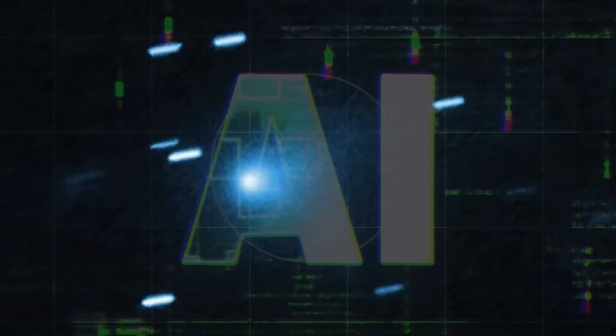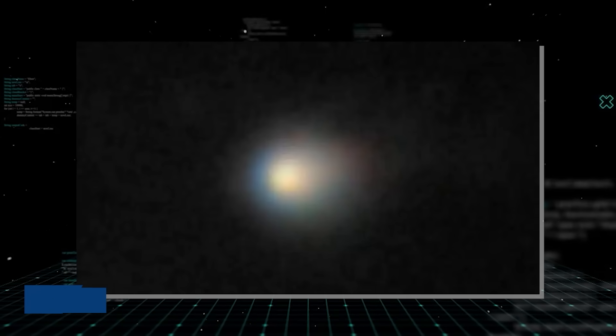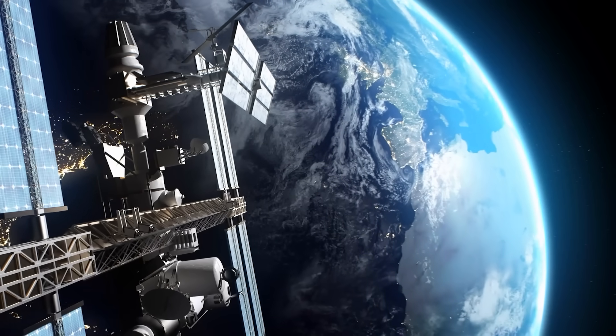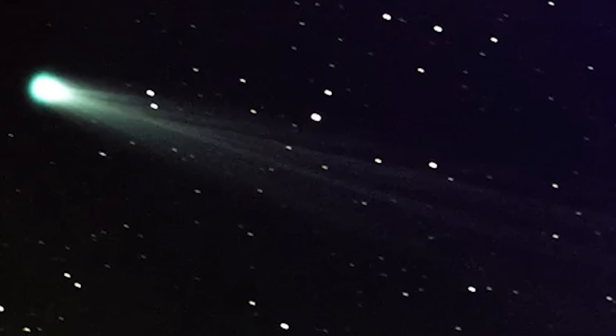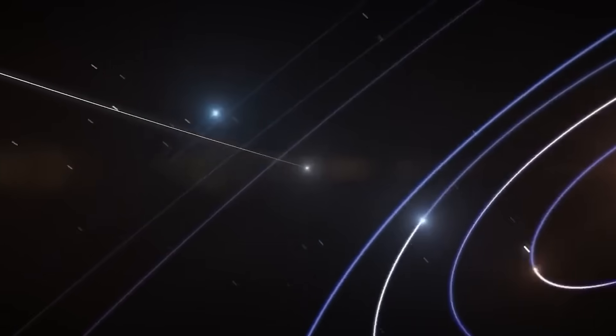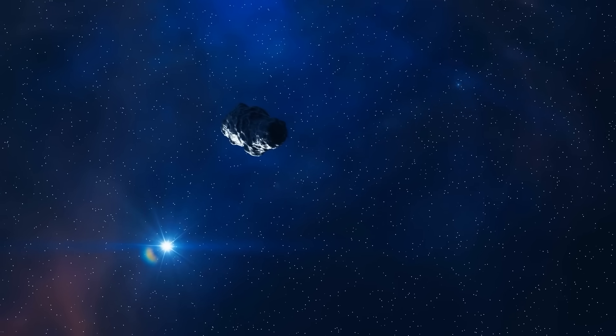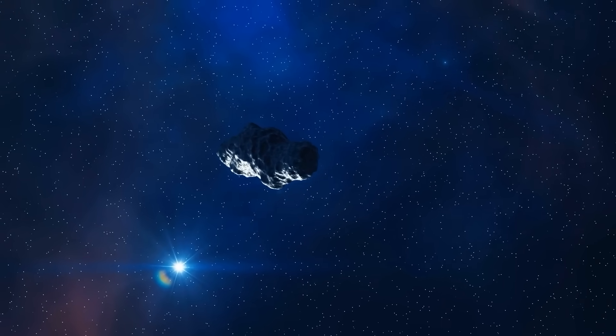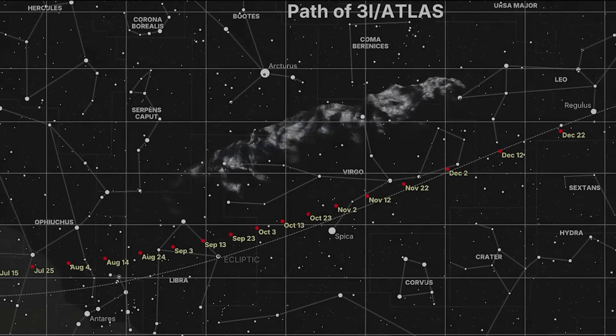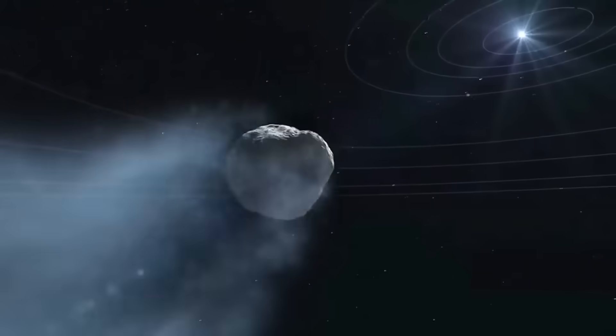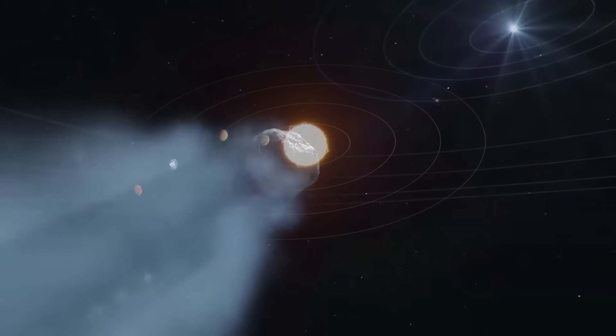AI enhanced pictures of the interstellar object 3i Atlas. These weren't your typical telescope shots. They showed something else. Something inside the icy shell of the comet. Just as quickly as the images appeared, they were gone. But a terrifying warning remained. A warning that suggests the object's dramatic disintegration was no accident and that something was intentionally set loose in our solar system.